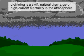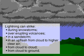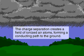Lightning is a high-current electrical discharge in the atmosphere. Thunderclouds are the most common producers. For this discharge to occur, there must be a charge separation large enough within the cloud to cause electrical breakdown of the air.